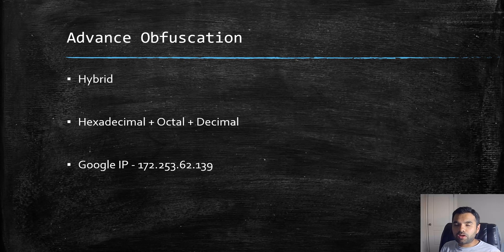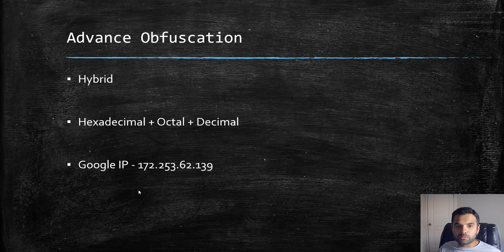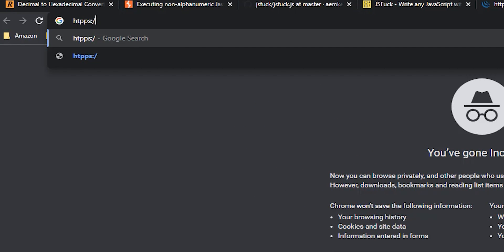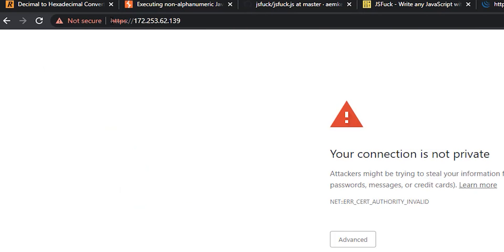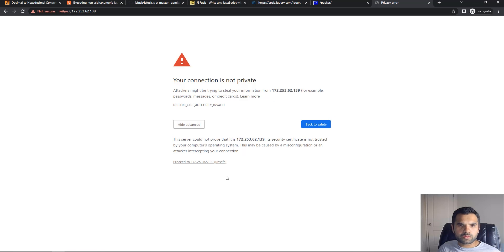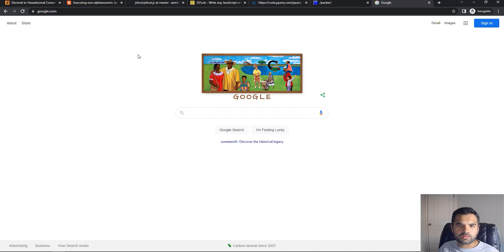The first technique we didn't cover in the previous episode is the hybrid approach. We saw individually how to use hexadecimal, binary, and octal. Today I'm going to show you how you can combine all of these to obfuscate the entire hostname. For example, 172.253.62.139 is a Google IP address — if you go to it, it should land you on the Google page, and as we can see, the certificate is also validated.